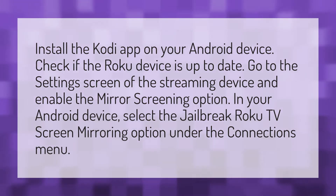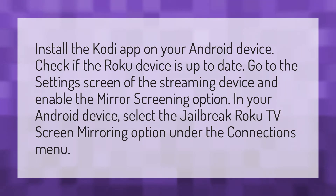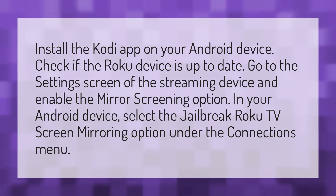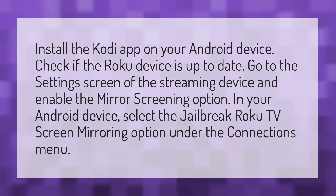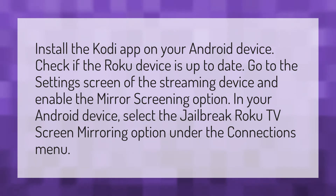Install the Kodi app on your Android device. Check if the Roku device is up to date. Go to the settings screen of the streaming device and enable the mirror screening option. In your Android device, select the jailbreak Roku TV screen mirroring option under the connections menu.